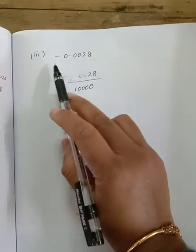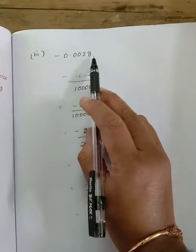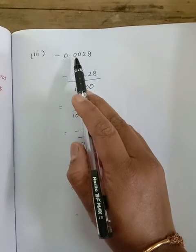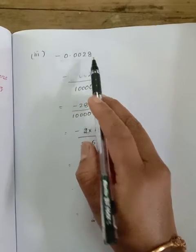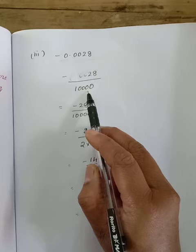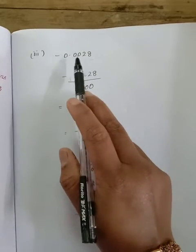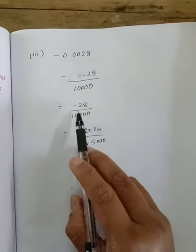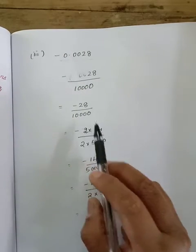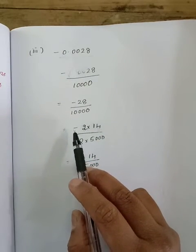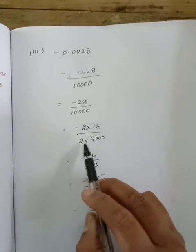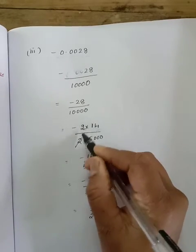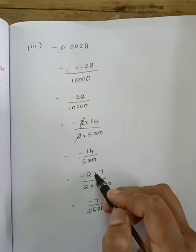Next is your third sum minus 0.0028. Next to the decimal point we have 1, 2, 3, 4 numbers. So in the denominator we are going to write four zeros and we can remove the decimal point. The number is minus 28. So minus 28 divided by 10,000. 28 can be written as minus 2 into 14 divided by 2 into 5000. 2 and 2 get cancelled. Minus 14 divided by 5000.